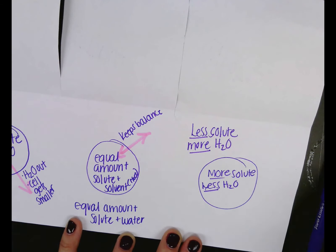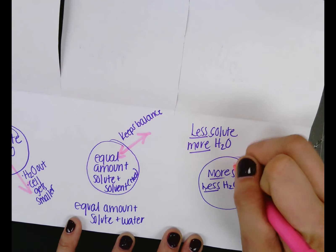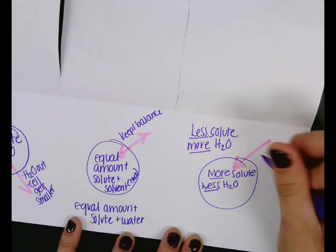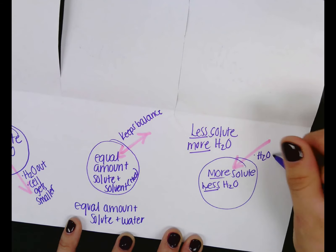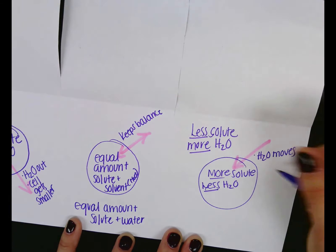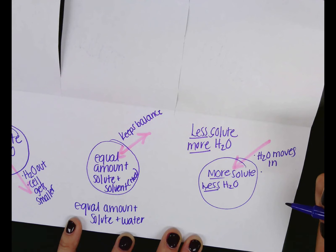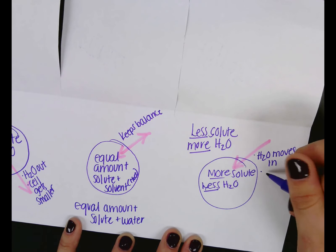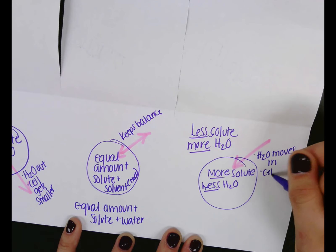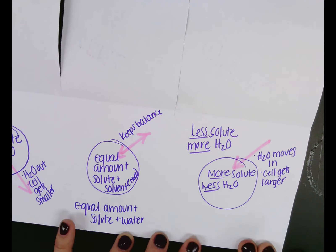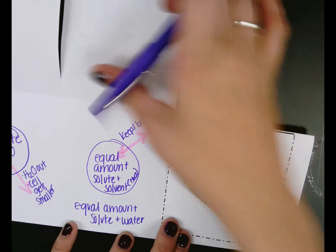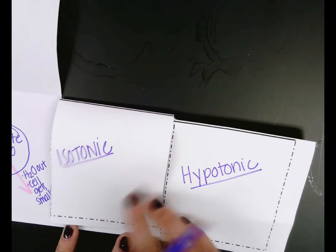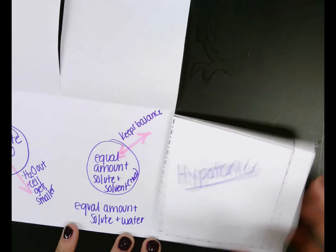So what's going to happen to this guy? Where's the water going to move? To the inside. So H2O moves in, so what's going to happen to that cell size? If the water's moving in, it's going to get fat. Cell gets larger. So now all you have to do is you can flip this down and you can say isotonic, hypotonic.